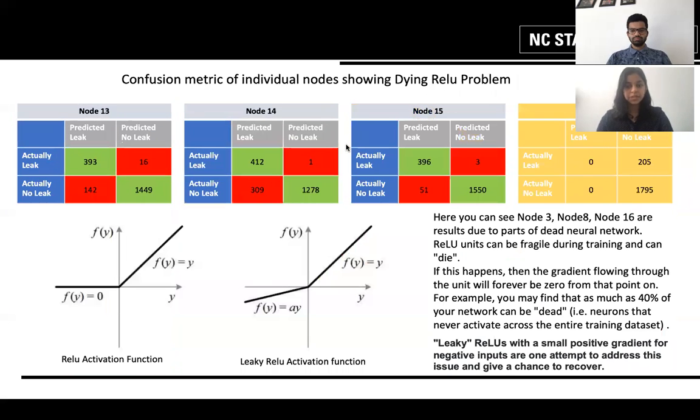This demonstrates the famous dying ReLU problem because ReLU units can be fragile during training and when this happens, the gradient flowing through the unit will forever be zero from that point onwards. This can be tackled by using the leaky ReLU activation function. By assigning a small positive gradient for the negative inputs, we can address the problem of dying parts within the network.